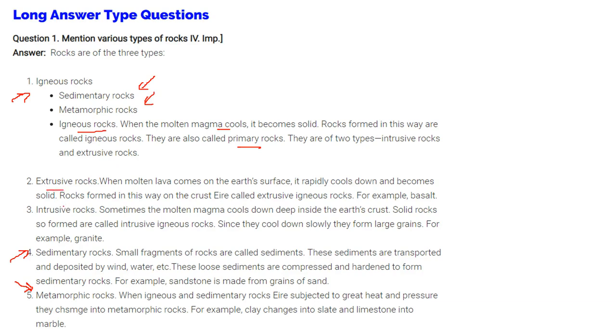Extrusive rocks and intrusive rocks, what are these? When molten lava comes on the earth's surface, it rapidly cools down and becomes solid. Rocks formed in this way on the crust are called extrusive igneous rocks. For instance, basalt.